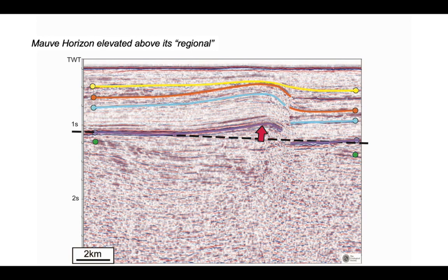Finally, now, let's do the same for the green horizon. Now the green horizon also is broken, but it also has an unconformity relationship with the mauve horizon on the right hand side.